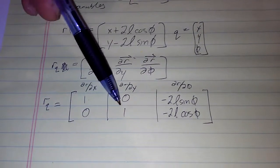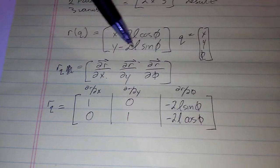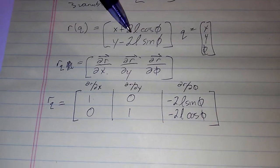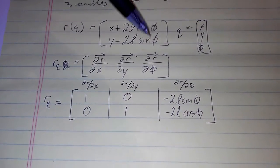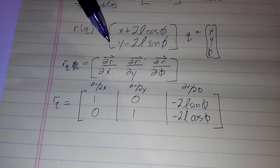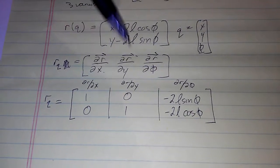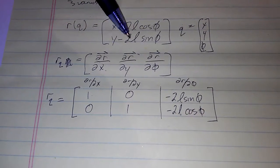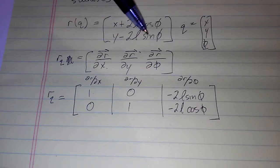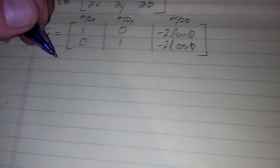Partial with respect to phi: this is a constant, it can come out front, so we take 2L times the derivative of this which is negative sine phi, so we get negative 2L sine phi. Same thing for the second row: with respect to x the derivative is zero, with respect to y derivative is one, with respect to phi the derivative is—we'll bring this out front—negative 2L times cosine phi. So there you have it.